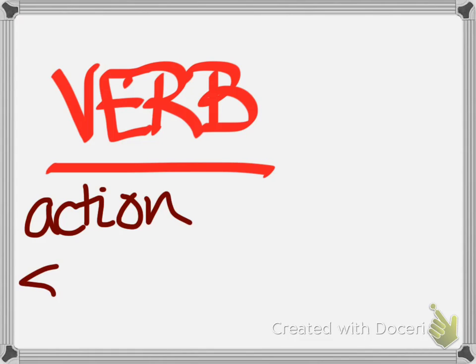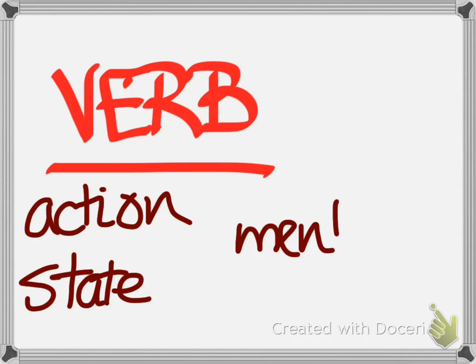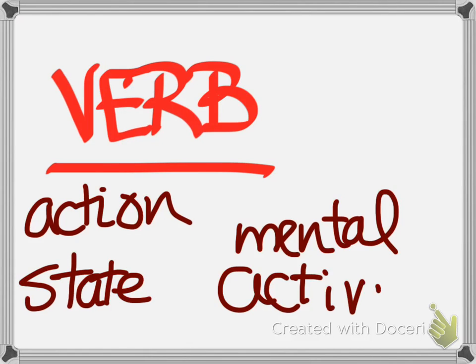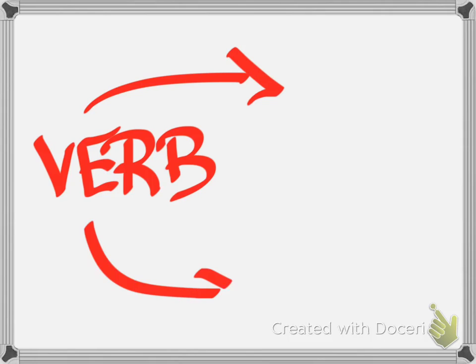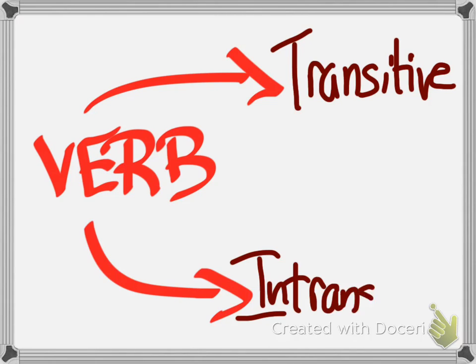We know from our previous classes that a verb is a word that describes an action, a state, or a mental activity. And one traditional way that we've always had of dividing verbs is to organize them in the categories of transitive, where they have a direct object, and intransitive, where you don't need a direct object to complete the idea of the verb.